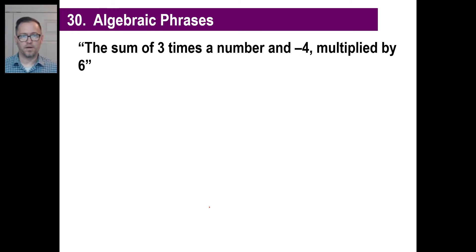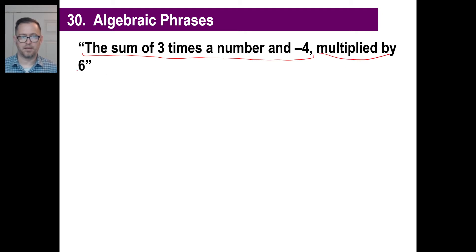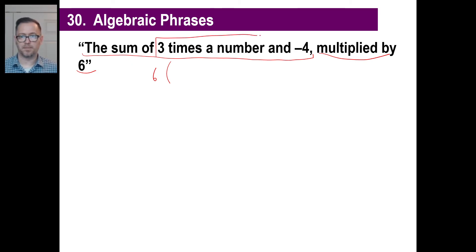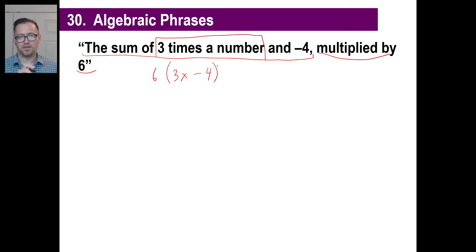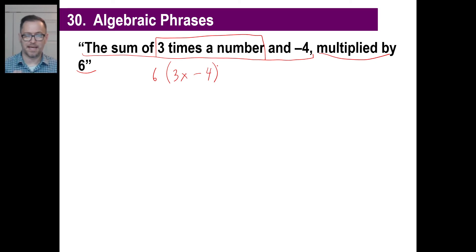Six times the sum of three times a number and negative four. That whole thing gets multiplied by six. Three times a number is 3X. We're going to add 3X to negative four, so 3X minus 4. The full expression is 6(3X − 4). We're not worried about distributing the six right now — just writing down what the English phrase says.